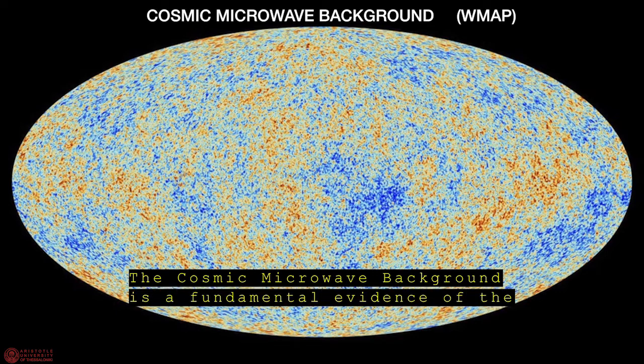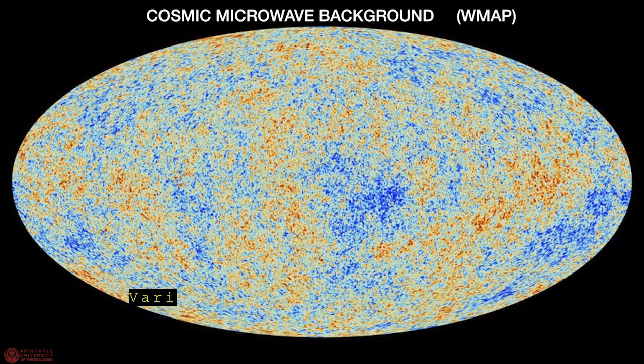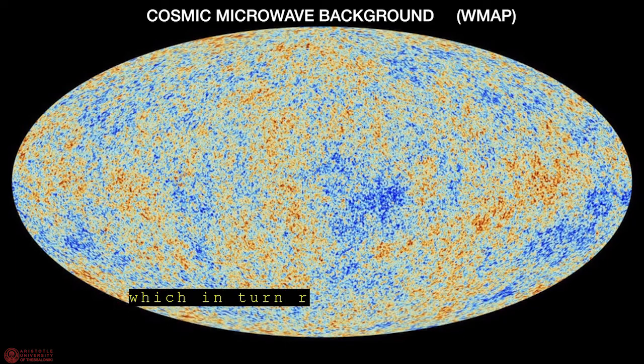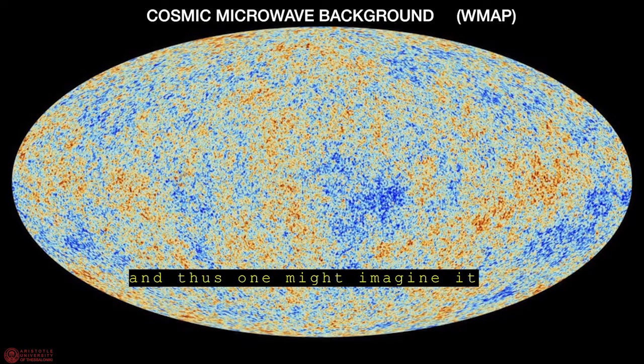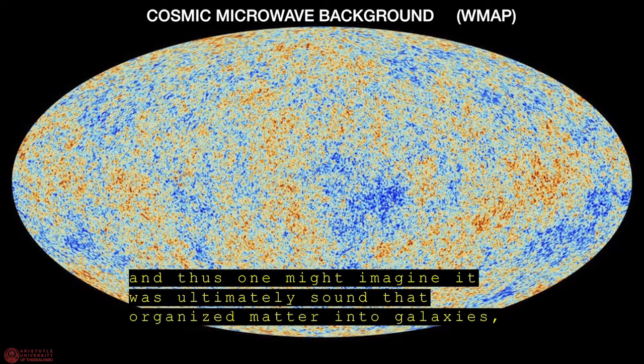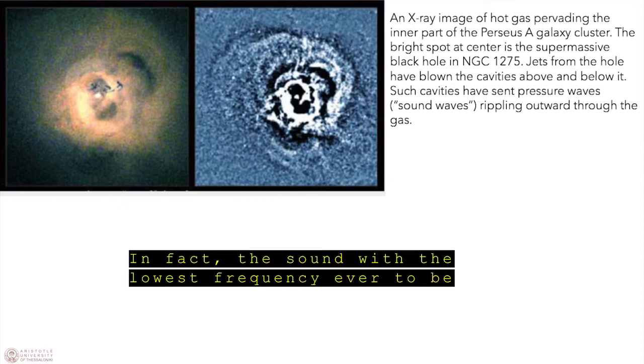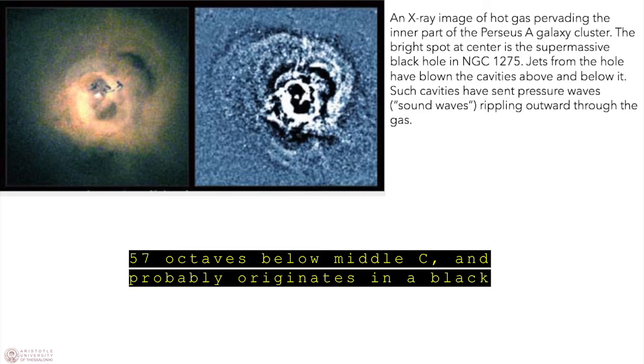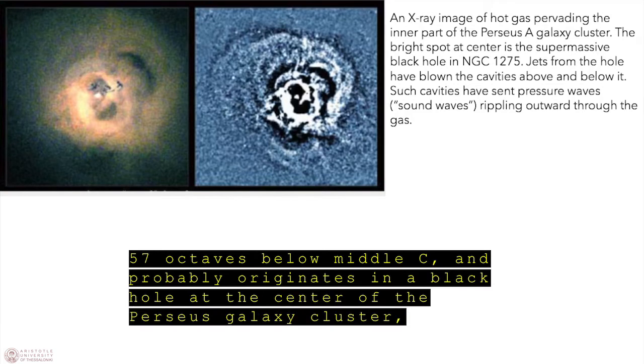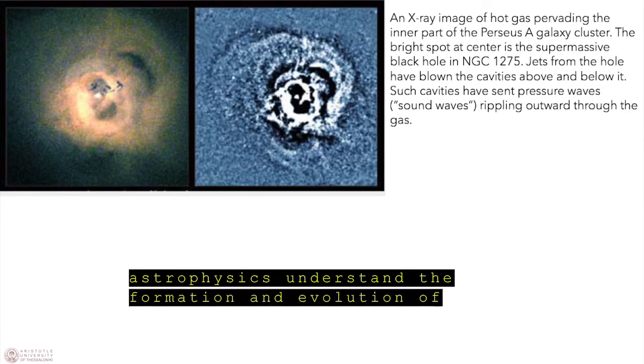The cosmic microwave background is a fundamental evidence of the big bang. It shows the universe at 380,000 years of age and it is homogeneous roughly to one part in 100,000. Variations in color correspond to variations in temperature which in turn represent differences in pressure. But such pressure waves can be interpreted as sound waves and thus what one might imagine it was ultimately sound that organized matter into galaxies, galaxy clusters and all the filaments of the cosmic web. In fact, the sound with the lowest frequency ever to be detected by humans corresponds to a B-flat 57 octaves below middle C and probably originates in a black hole at the center of the Perseus galaxy cluster by the inflation of bubbles of relativistic plasma.